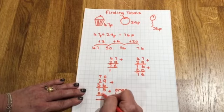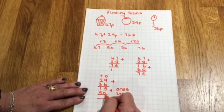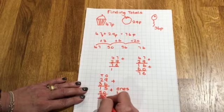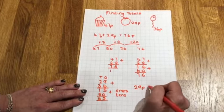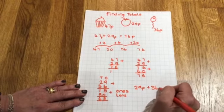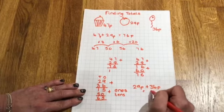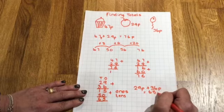Now I can add 15 add 50. 5 add 0 is 5. 1 ten add 5 tens is 65. So 29p add 36p equals 65p.